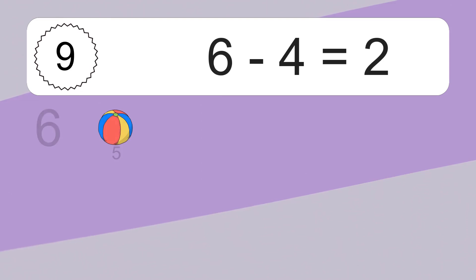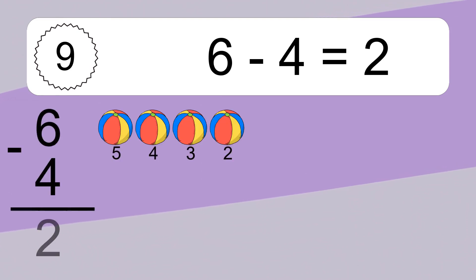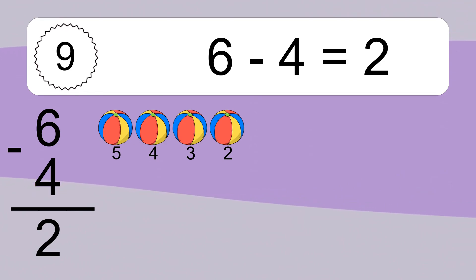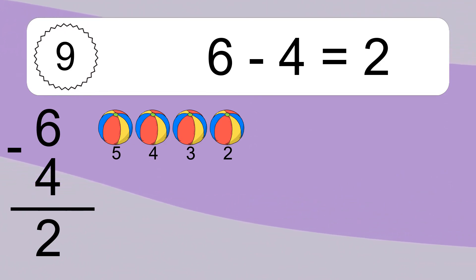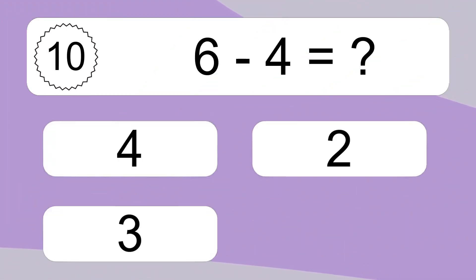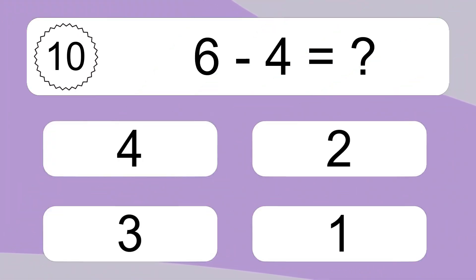6 minus 4 equals what? 6 minus 4 equals 2. Let's count it: 5, 4, 3, 2.